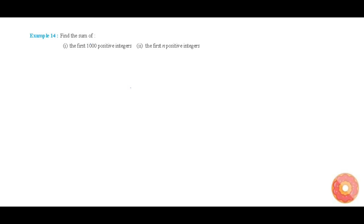In this video we are going to do the first part of this question. The first part is finding the sum of first thousand positive integers which is 1 + 2 + 3 + 4 and so on till 1000. These numbers form a sequence that is AP.